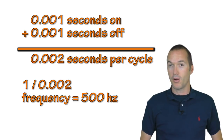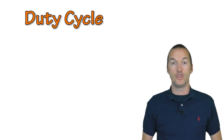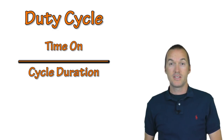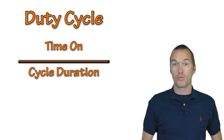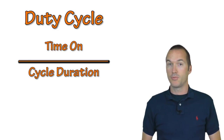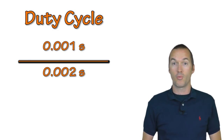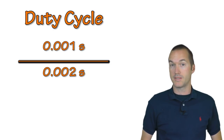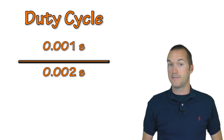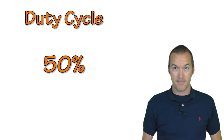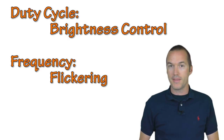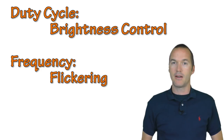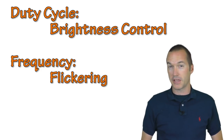The second part of a PWM signal is called the duty cycle, which is the time that the circuit is on divided by the total duration of the cycle. In this example, we turned on the light for 1 millisecond and our cycle duration was 2 milliseconds, so our duty cycle is 50%. The duty cycle determines how bright the LED appears, and the frequency determines how noticeable the flickering is.